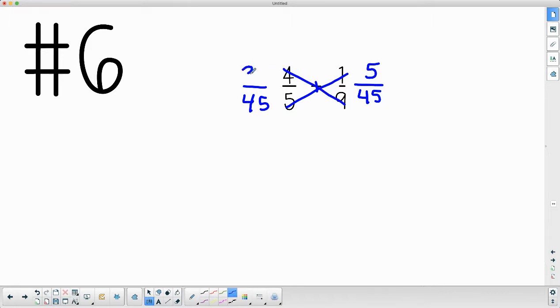9 times 4 is 36. So then we add our numerators, and the denominator stays the same. And then do any simplifying if necessary.